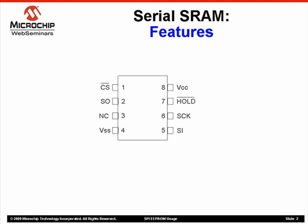Here you can see the device pin out. Pin 1 is chip select, which controls communication to the chip. Pin 2 is data out. Pin 3 is not connected. Pin 4 is ground. Pin 5 is data in. Pin 6 is the clock. Pin 7 is hold. And Pin 8 is supply voltage. Note that the chip select and hold pins are both active low.